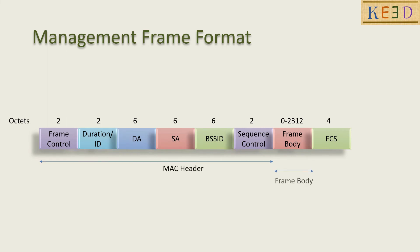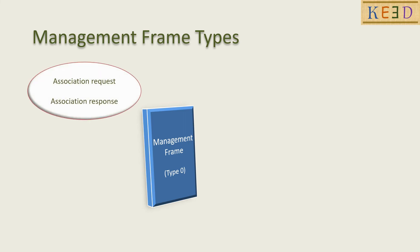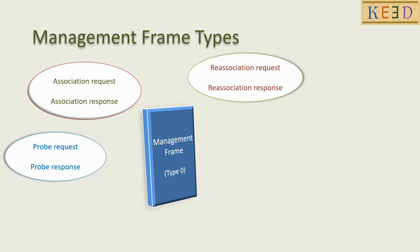Now let us understand the management frame format. The management frame does not have address 4. Address 1 equals the destination address, address 2 equals the source address, and address 3 equals the BSS ID. The management frame has type 0, and these are the different management frames as per subtypes.